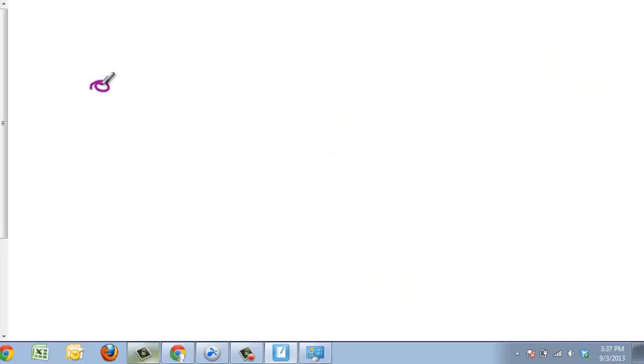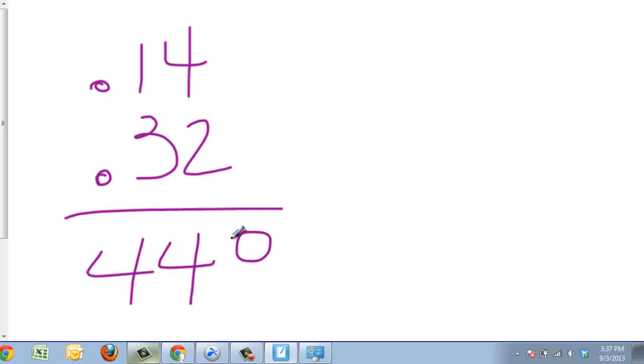If I was to do 0.14 times 0.32, I would still have the same answer of 4, 4, 8 when I multiplied that out. But I would need to have 4 digits after the decimal point. So I would add a 0 into the front and then put a decimal point. That's the only way to actually have 4 places after the decimal point.